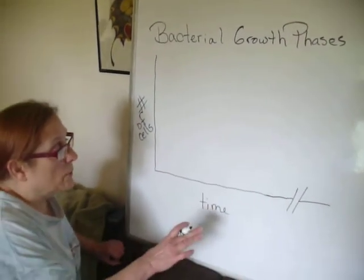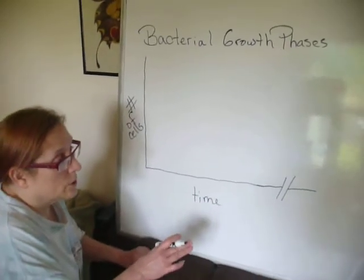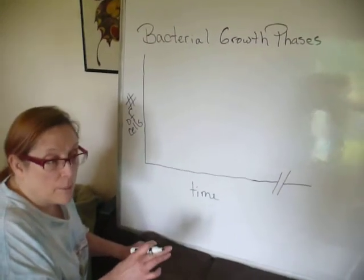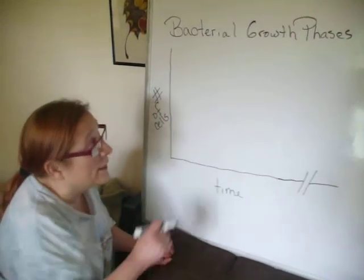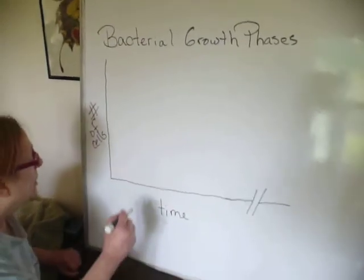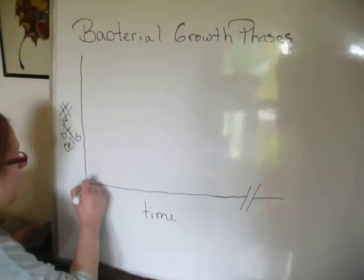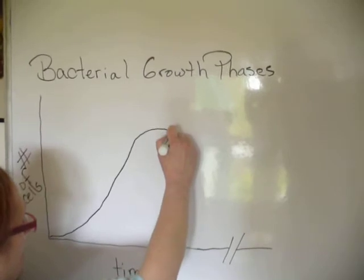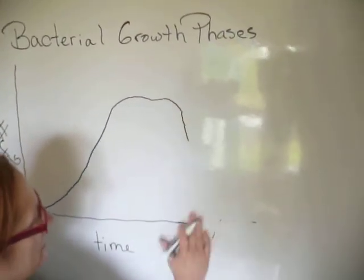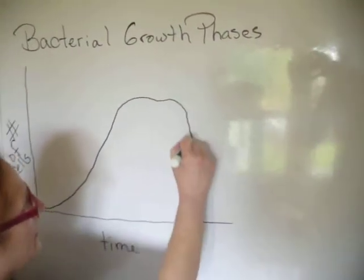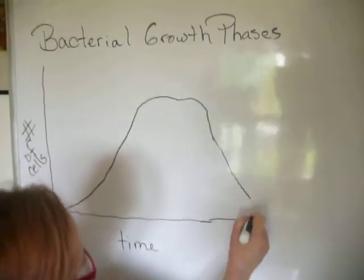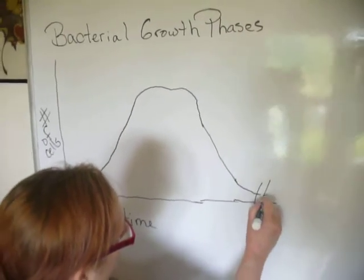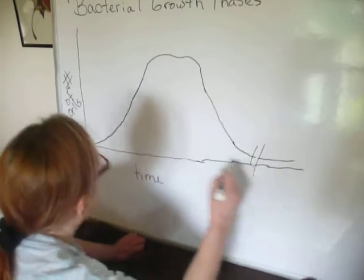Some of you have asked about question number two from quiz two, part two — the fifth part or phase of bacterial growth. So let me go over that. We have our lag, our log, our stationary, our decline, and then there's this part we get to called prolonged decline.